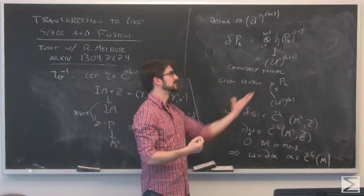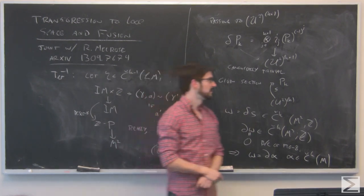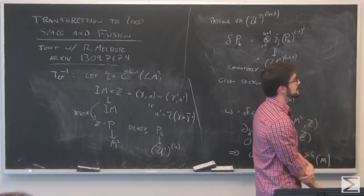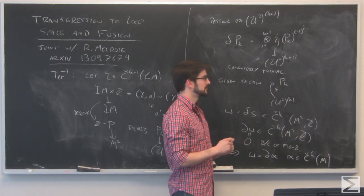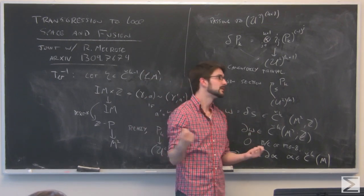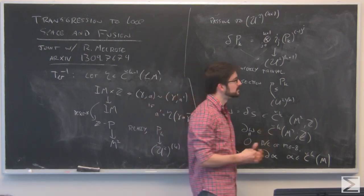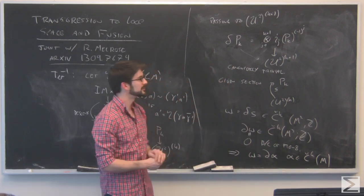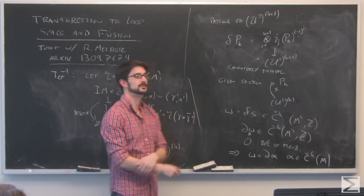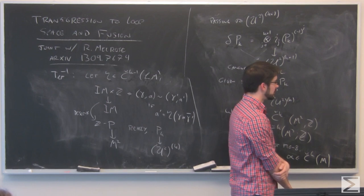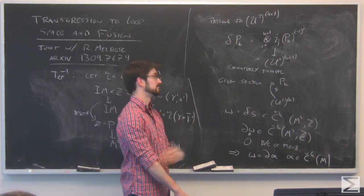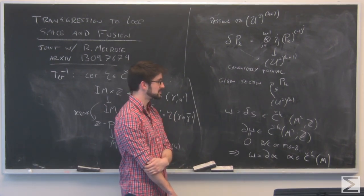What would be really interesting to do next is extend this not just to Čech cohomology but to Deligne cohomology. Then I'd really be looking at not just bundles or gerbes, but bundles with connection, or gerbes with connection. That would give a nice realization of a higher transgression, higher holonomy for higher gerbes with connection, which would be of interest in various parts of geometry. Thanks — I'll end there.